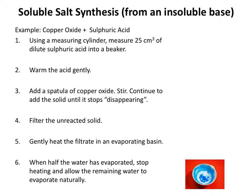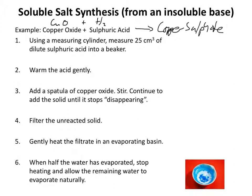For this example we're going to prepare a sample of copper sulphate using copper oxide, which is an insoluble base, and sulphuric acid. If we had CuO and H₂SO₄, copper sulphate is CuSO₄ because both species have a valency of 2. We've got H₂ and O left over, so we're missing water.